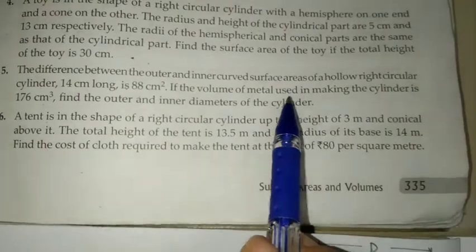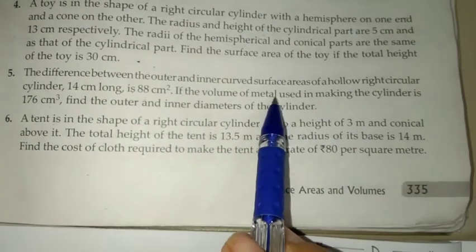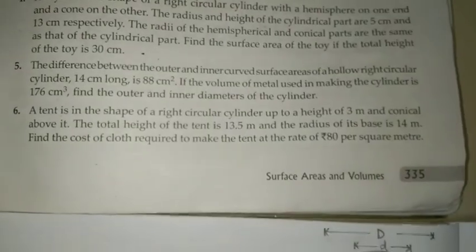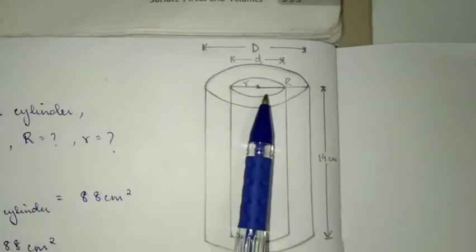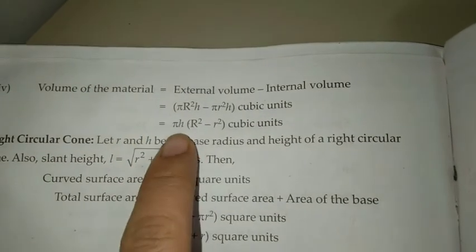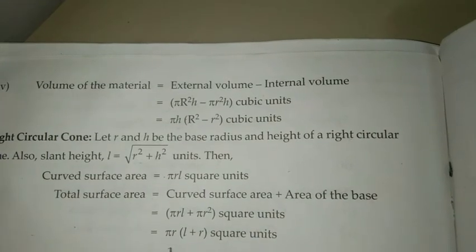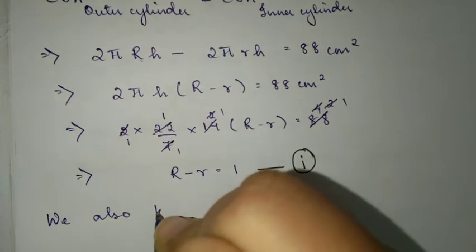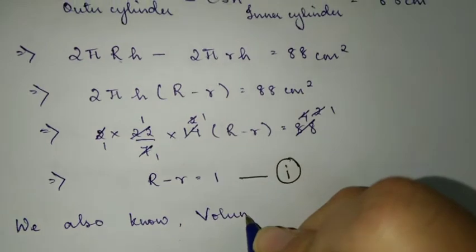Next up, the question says volume of the metal used in making the cylinder. The volume of material, the material used in the hollow cylinder. The formula for volume of the material is πH(R² - r²). Therefore, we also know that volume of the material used is 176 cm³.